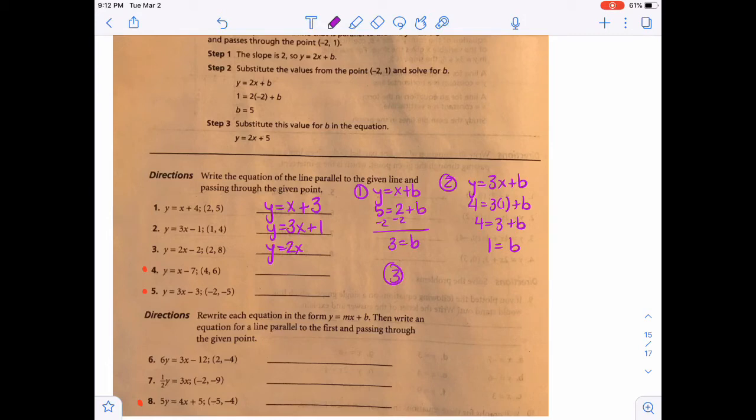For number 3, we have y equals 2x plus b, and we will plug in a 2 and an 8. So 8 equals 2 times 2 plus b. So that's 8 equals 4 plus b. Subtract the 4, and you get 4. So then plus 4. So I'd like for you to try that for 4 and 5.